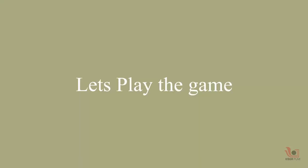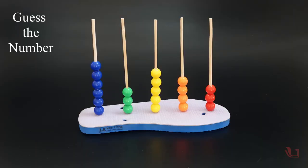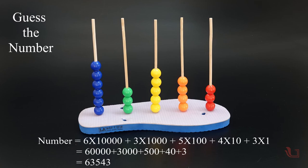Now, you can play mathematical games using this simple abacus with your friend. You place some random beads in each stick and ask your friend to calculate the total value of all the beads using their place values. Here, the total value of all the beads is 63,543.